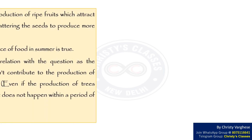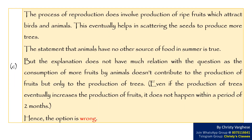Consider option C. The process of reproduction does involve production of ripe fruits which attract birds and animals, and this eventually helps in scattering the seeds to produce more trees. The statement that animals have no other source of food in summer is true, but the consumption of more fruits by animals doesn't contribute to the production of more fruits — only to the production of trees. Even if the production of trees eventually increases the production of fruits, it does not happen within a period of 2 months. Hence, the option is wrong.